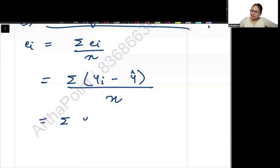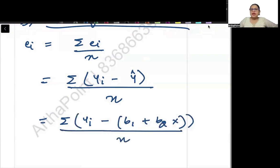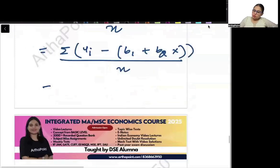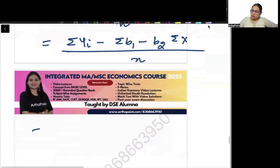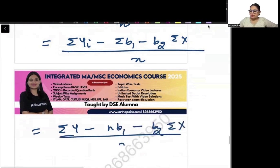What is the predicted value of Y? B1 plus B2 X divided by N. So this is going to give you summation YI minus summation B1 minus B2 summation X divided by N. So this will give you summation Y minus NB1 minus B2 summation X divided by N.